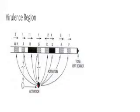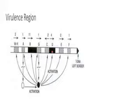Each gene codes for different kinds of proteins responsible for different functions. Vir B along with Vir B4 is responsible for forming a tube in order to transfer the gene of interest into the host cells. Vir C acts as a helicase that helps in unwinding the DNA. Vir D has two components, Vir D1 and Vir D2, that help in cleaving — making a nick and cutting the required gene region. Vir E acts as a single-strand binding protein that helps in binding the released single strand of the gene and keeping it stabilized.